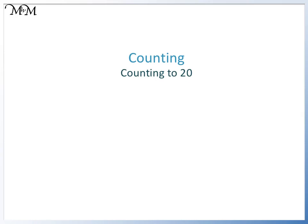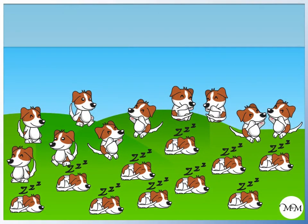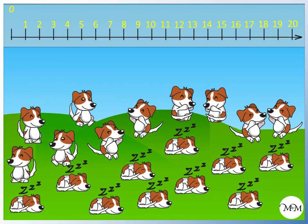Hi and welcome to our lesson on counting to 20. We are going to count the number of dogs. We start at zero, then begin to count up. Because there are lots of dogs, we will cross off each dog as we count it, so that we don't count it twice.